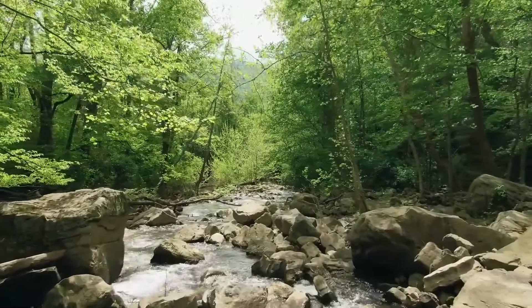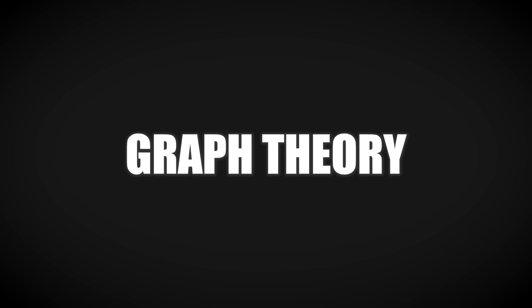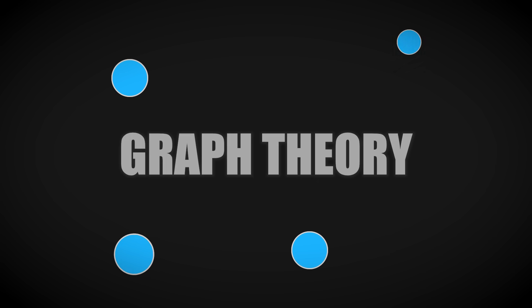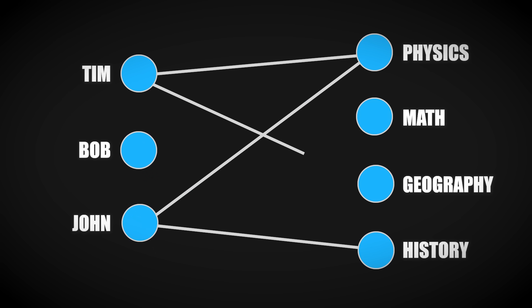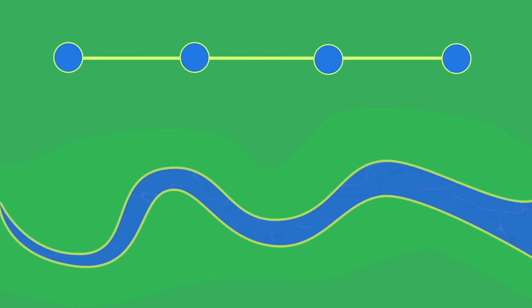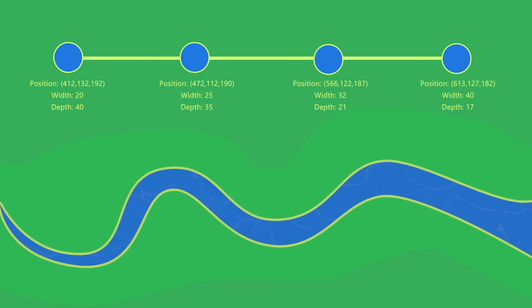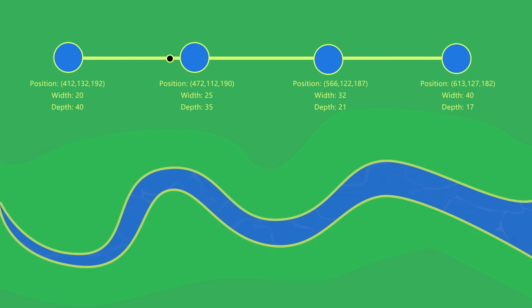Now let's get back to generating some rivers. To take our river from start to finish, we have to track position, width, depth, and speed for every single point — that's expensive to store and hard to calculate. But thankfully we can simplify the problem a lot using graph theory, which is just a way of representing things as nodes joined up with edges if they are connected. We create a node every 100 meters and connect them up, then assign position, width, and depth to each node. The splines make sure the path between nodes is smooth, and we can blend the other attributes smoothly from one node to the next.